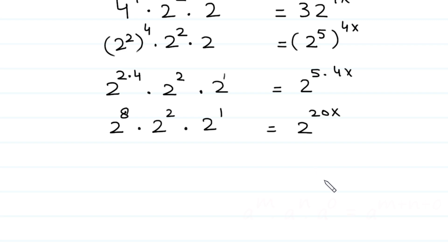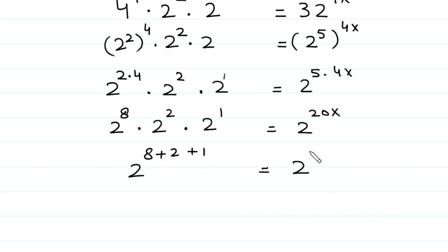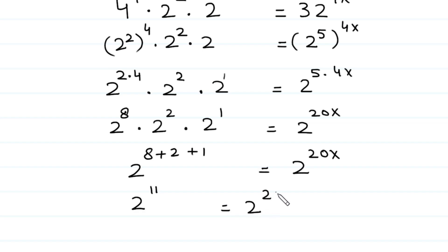There is a rule of exponents that a to the power m times a to the power n times a to the power o equals a to the power m plus n plus o. Using this rule, 2 to the power 8 plus 2 plus 1 equals 2 to the power 20x. That is 8 plus 2 equals 10, and 10 plus 1 equals 11, so 2 to the power 11 equals 2 to the power 20x.